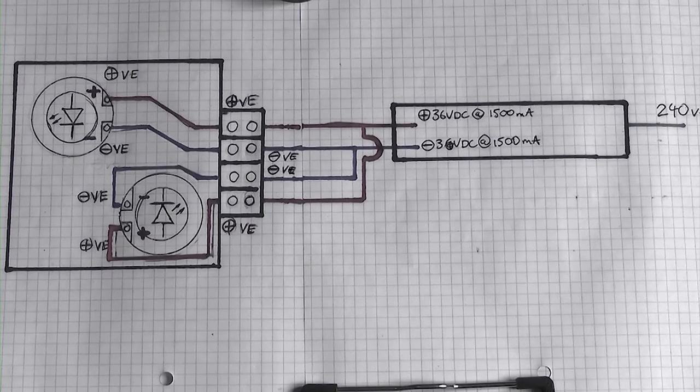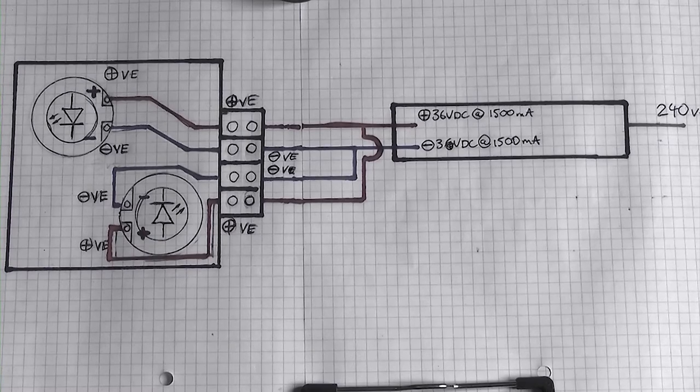Parallel divides the amps and maintains the volts. Series divides the volts and maintains the amps. We'll be covering series wiring in a later video.